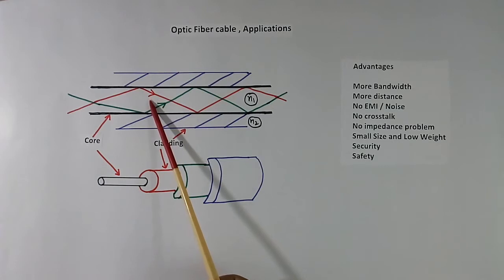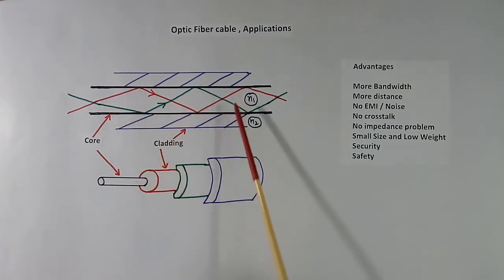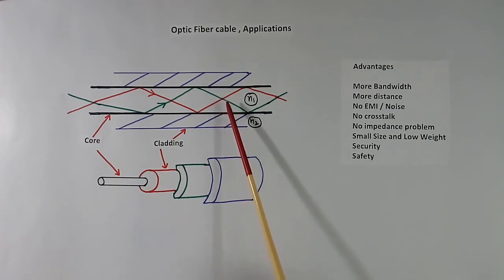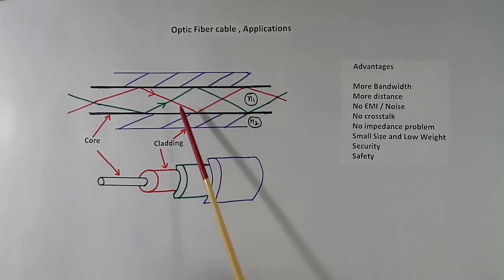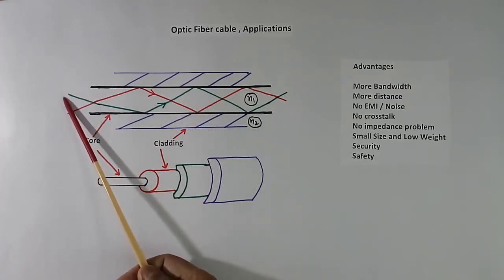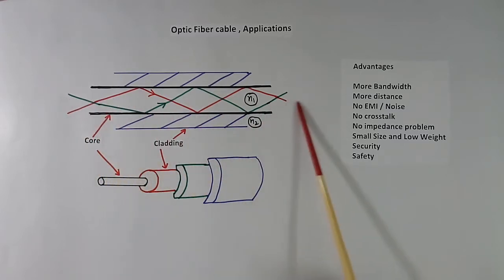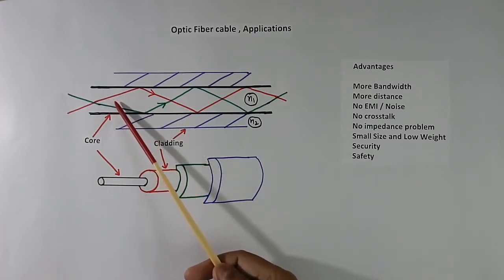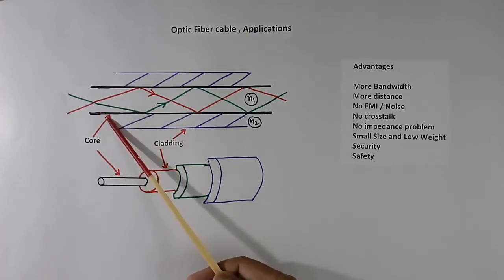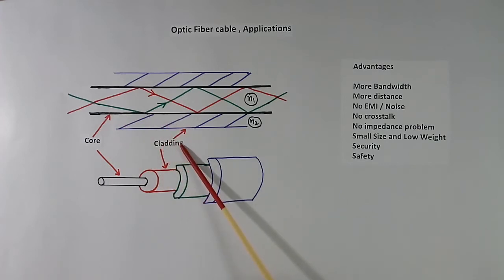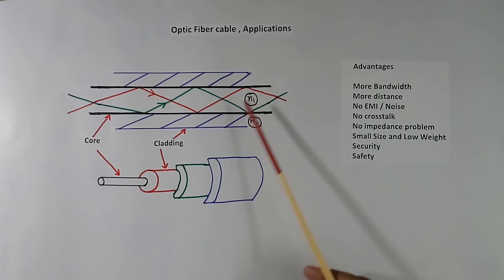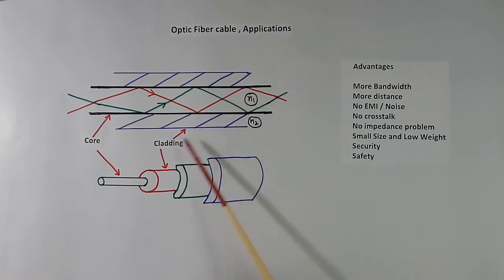Optic Fibre Cable is a very thin fiber made of glass or plastic. It is used to transmit light. It has basically two layers: the internal layer is called the core, and the outer layer is called cladding.